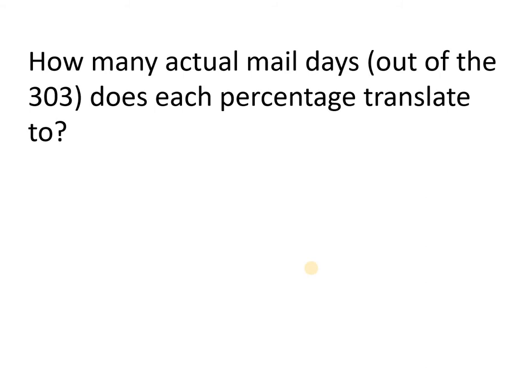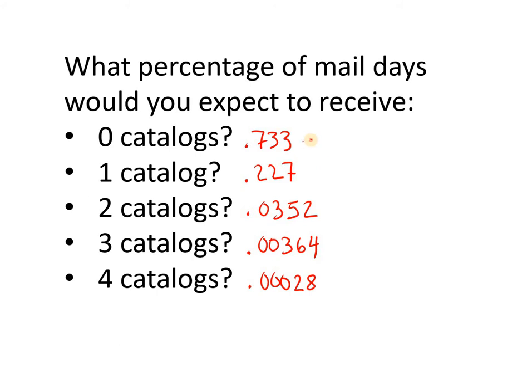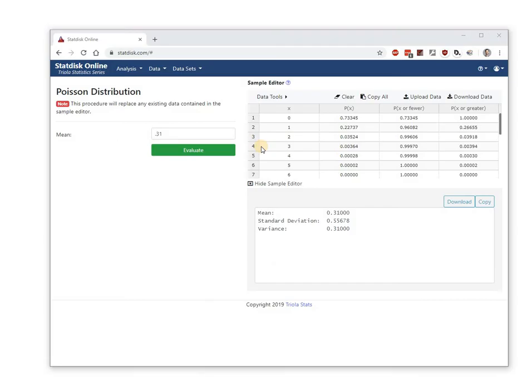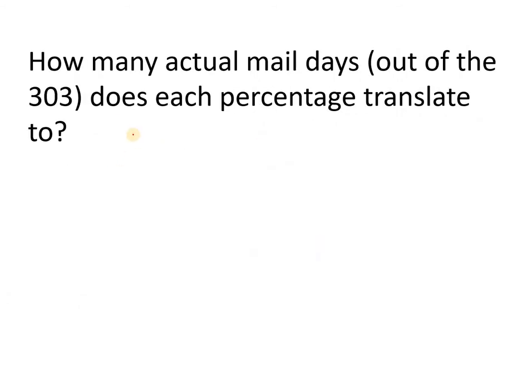The next question is: how many actual mail days out of the 303 does each one of those percentages translate to? For zero catalogs, that was 0.733 of the time. What is 0.733 of 303 days? Grab your calculator: 0.733 times 303 works out to 222 and a little bit. But since we're talking actual days, we'll round off — so that's 222 days.